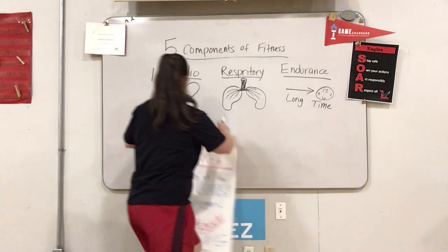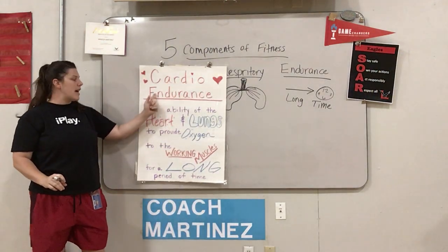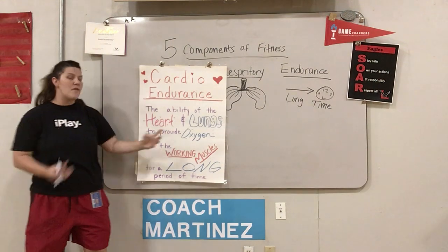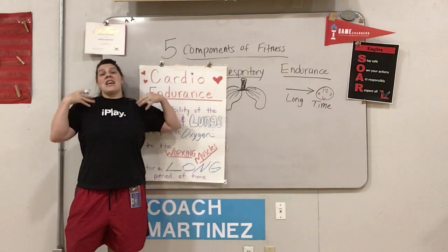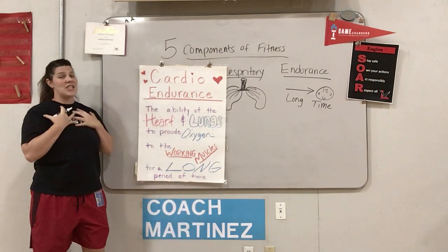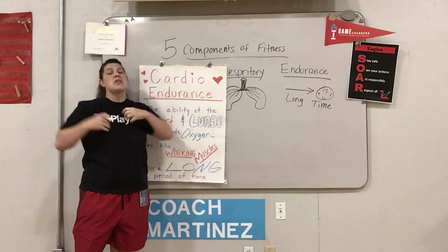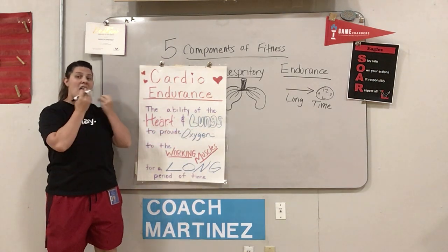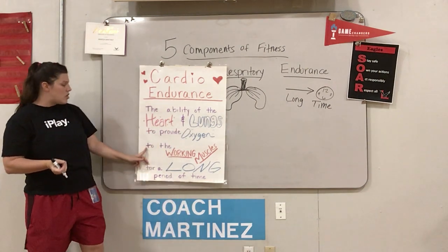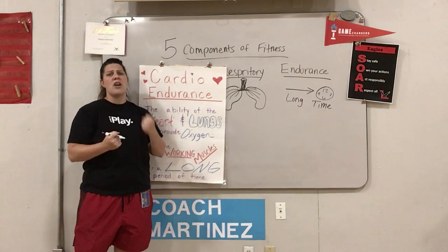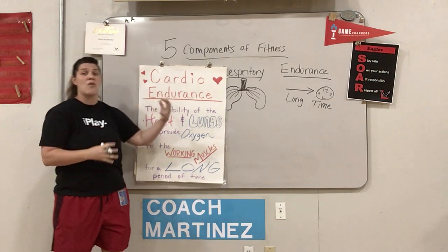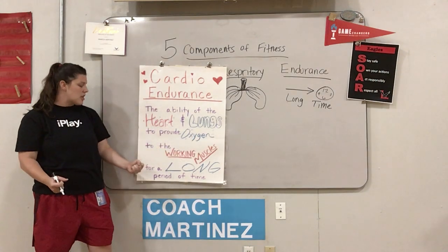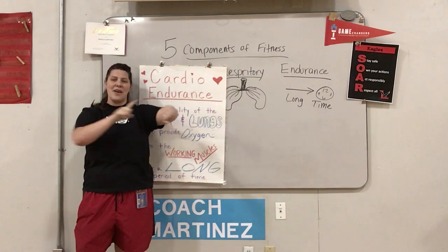Here's a quick poster. Cardio endurance: the ability of the heart — cardio — and lungs — respiratory — to provide oxygen. When we breathe in, we suck in oxygen, and when that oxygen goes into our lungs, the blood picks it up and the heart squeezes and pushes the blood to deliver that oxygen all over our body. It's the ability of the heart and the lungs to provide oxygen to the working muscles, and it does that for a long period of time. That's endurance.